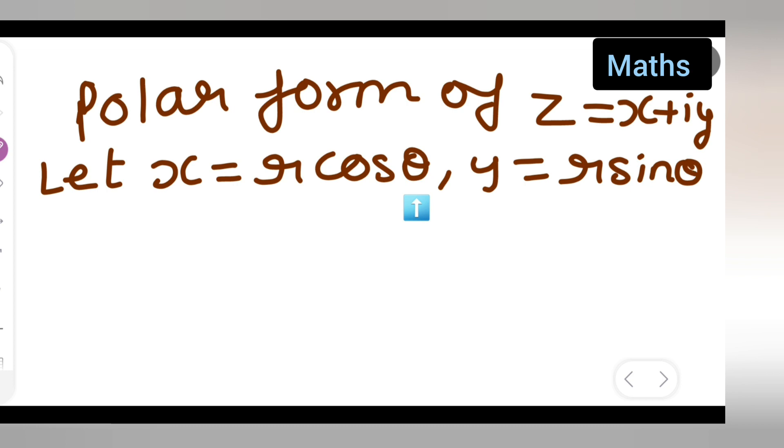Next, the mod of z, modulus of z square is equal to x square plus y square which is nothing but r square. That is, you can say that r is equal to mod of z.